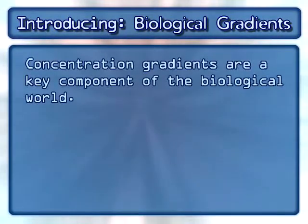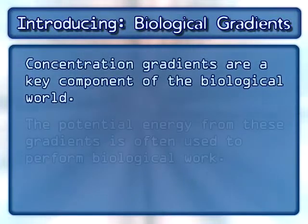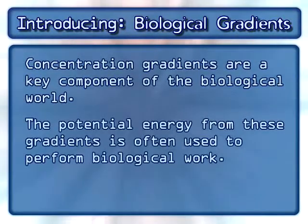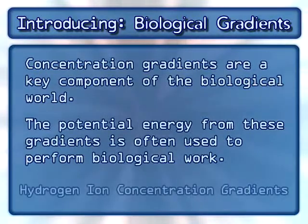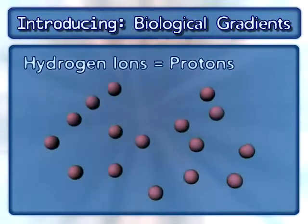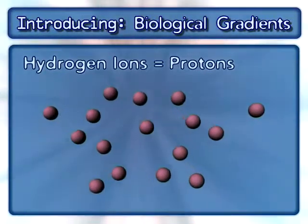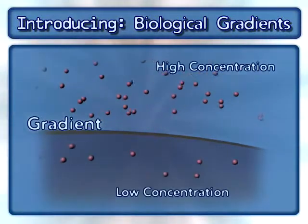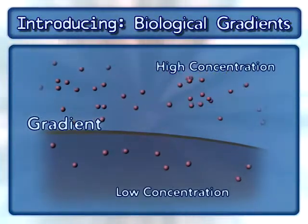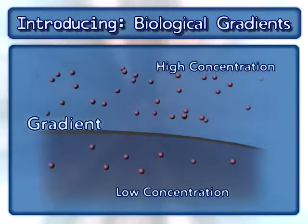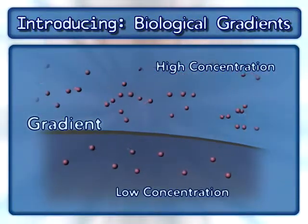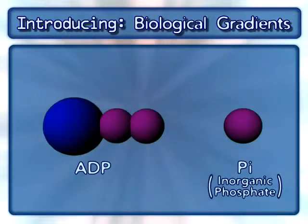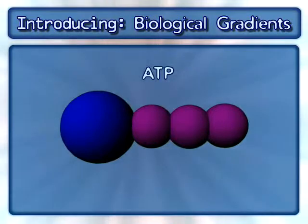Concentration gradients are a key component of the biological world. The potential energy from these gradients is often used to perform biological work. Here we will focus on hydrogen ion concentration gradients. Hydrogen ions are also known as protons. A gradient exists when there is a higher concentration of a molecule in one compartment compared to a neighboring compartment. This animation will demonstrate how the potential energy from a hydrogen ion gradient uses ADP and inorganic phosphate, also known as Pi, to synthesize ATP.